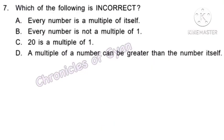Question 7. Which of the following is incorrect? Option A: Every number is a multiple of itself — correct. Option C: 20 is a multiple of 1 — correct, as any number x equals 1 times x. Option D: A multiple of a number can be greater than the number itself — correct, except for 0. Option B: Every number is not a multiple of 1 — this is incorrect, as every number is a multiple of 1. Hence option B is the answer.